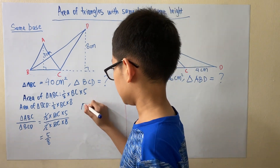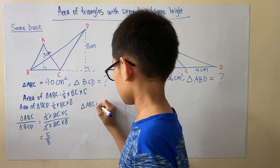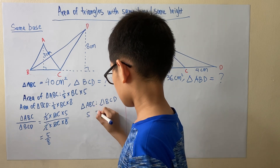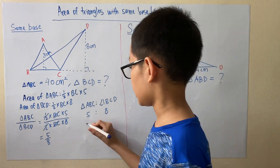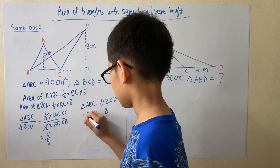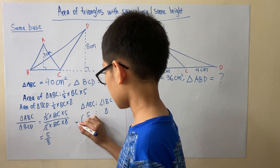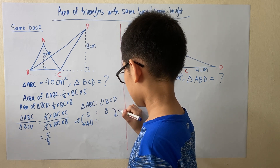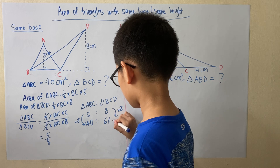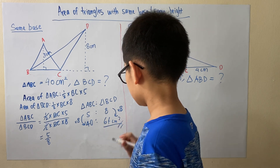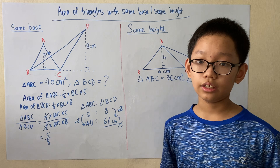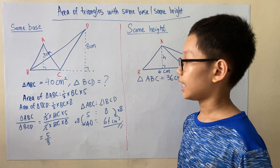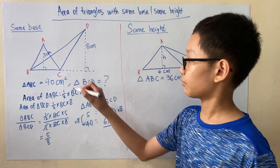Since we know that the area of triangle ABC is 40 cm², and to get this from 5 we multiply 5 by 8, we do the same on the other side and multiply 8 by 8, giving us 64 cm² which is the area of triangle BCD. From this we can conclude that for triangles with the same base, the ratio of their areas is the same as the ratio of their heights.